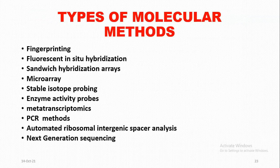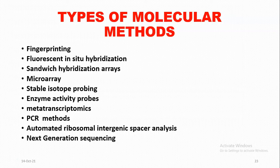Types of molecular methods include: fingerprinting, fluorescent in-situ hybridization (FISH), language sandwich hybridization arrays, microarray, stable isotope probing, enzyme activity probes, metatranscriptomics, PCR methods, automated ribosomal intergenic spacer analysis, and next generation sequencing, properly known as NGS.